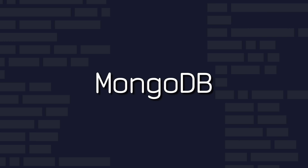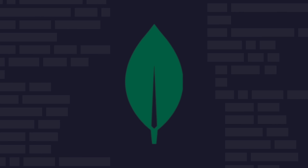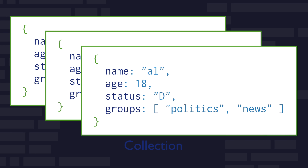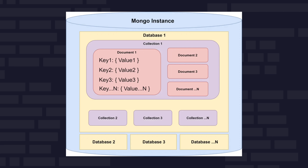MongoDB is a NoSQL database that stores data in flexible JSON-like documents, allowing for fluid data models and rapid development. It's particularly useful for applications that require scalability, fast querying, and the ability to handle a variety of data types.